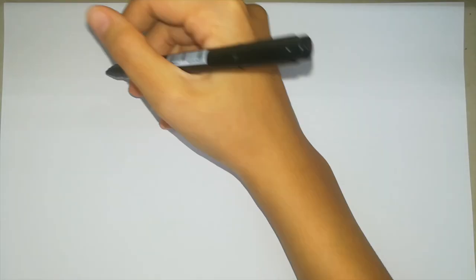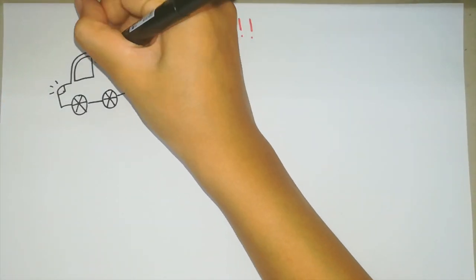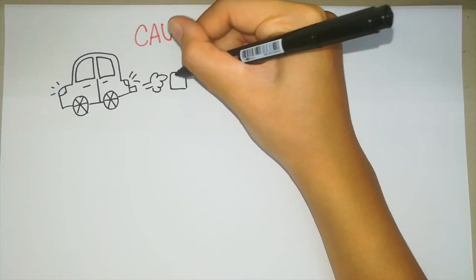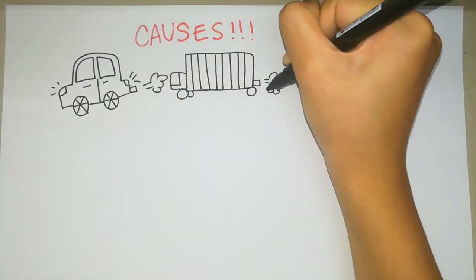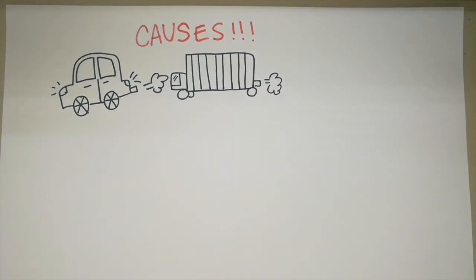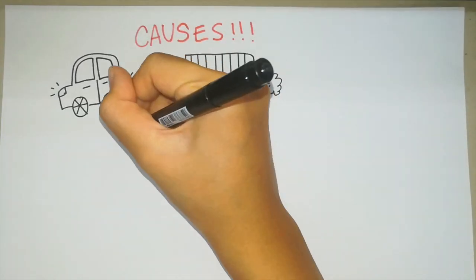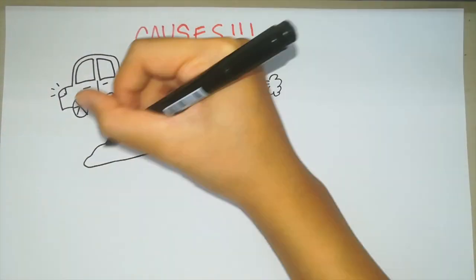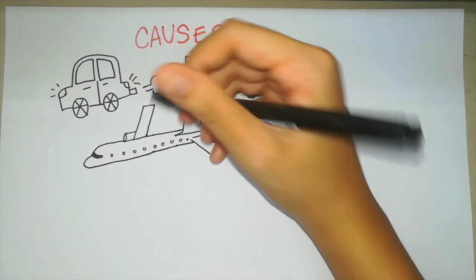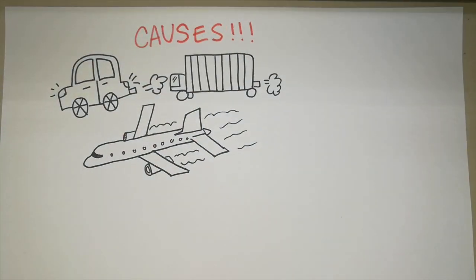The major causes of air pollution today are burning of fossil fuels. It is the combustion of fossil fuels like coal, petroleum, etc. It emits from vehicles such as cars, trains, trucks, airplanes causing huge amounts of air pollution.